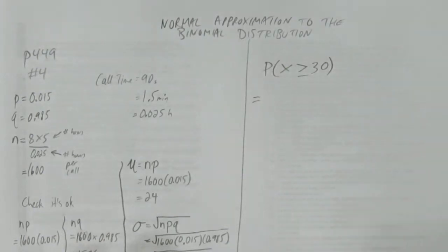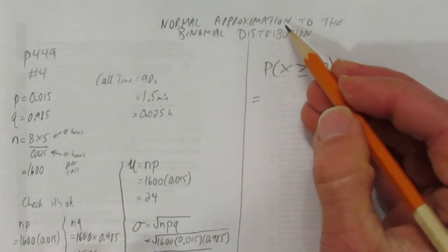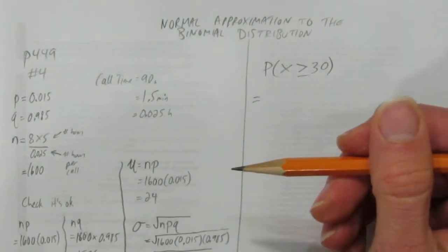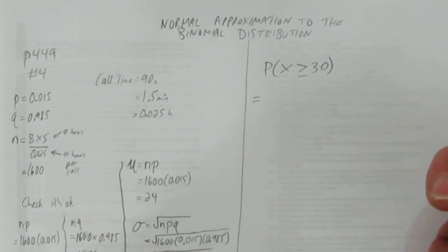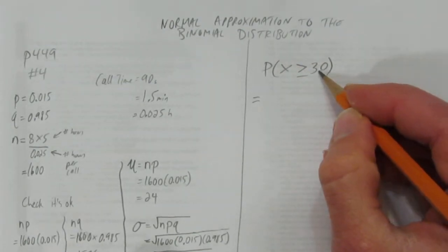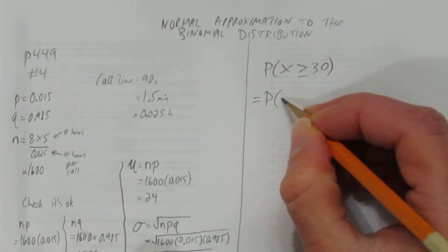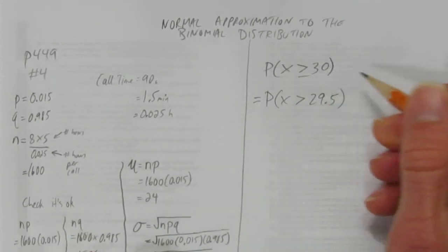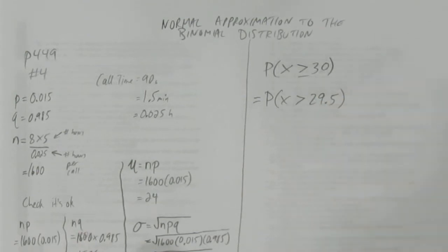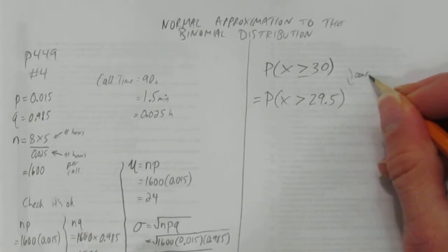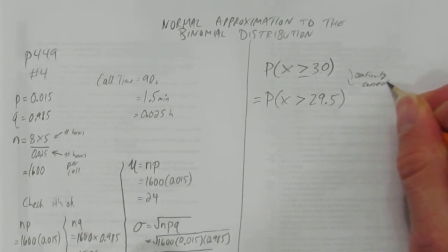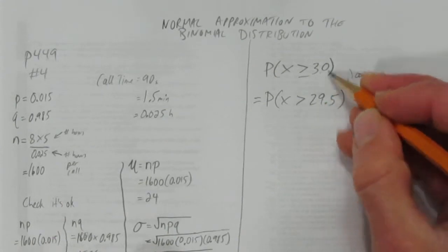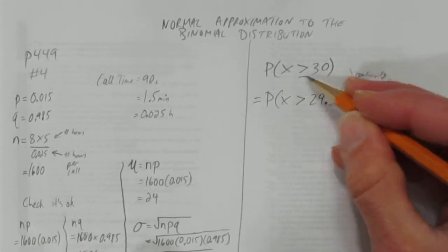The first thing we need to do is the continuity correction. We're using a normal approximation, which is continuous, to a binomial distribution, which is not continuous. That is, these are items. These cold calls, calls can't have decimals, they're discrete. But we need to approximate. So to include 30, we have to say we actually want to be greater than 29.5. That allows us to include the 30 data. This is called the continuity correction. It involves adjusting the number you're looking for so you actually include what you're looking for when you do the normal approximation.